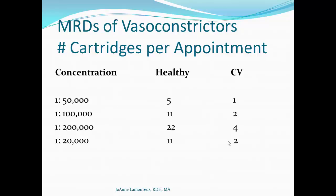Here is a summary table you may find helpful, showing the number of cartridges you can deliver based on vasoconstrictor ratio — the first three concentrations are epinephrine, the last is levonordefrin. Notice the dramatic difference: 11 cartridges if the patient is healthy, versus only 2 if they have cardiovascular disease.